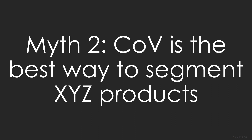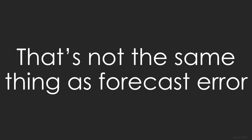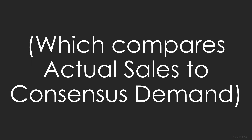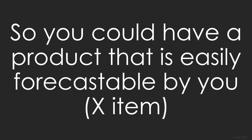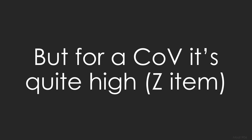Myth number 2: the coefficient of variance is the best way to segment XYZ products. COV is just looking at the actual history — that's not the same thing as forecast error, which compares actual sales to consensus demand. So you could have a product that is easily forecastable — an X item — maybe because a customer gives you very good point-of-sale data, but its COV is quite high, making it a Z item.